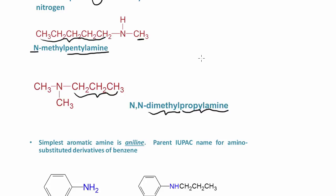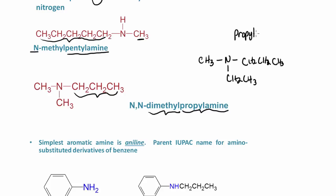What if we had something like this? We have a methyl group, a propyl group, and an ethyl group. This would still be a propylamine. We have an ethyl and a methyl group — ethyl has priority. So this would be N-ethyl-N-methylpropylamine, all one word.